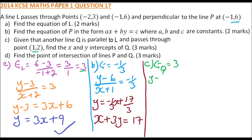We say y minus 2 divided by x minus 1 equals 3. Cross multiply to get y equals 3x minus 3 plus 2, which simplifies to y equals 3x minus 1. So once we have the equation, we can find the intercepts.